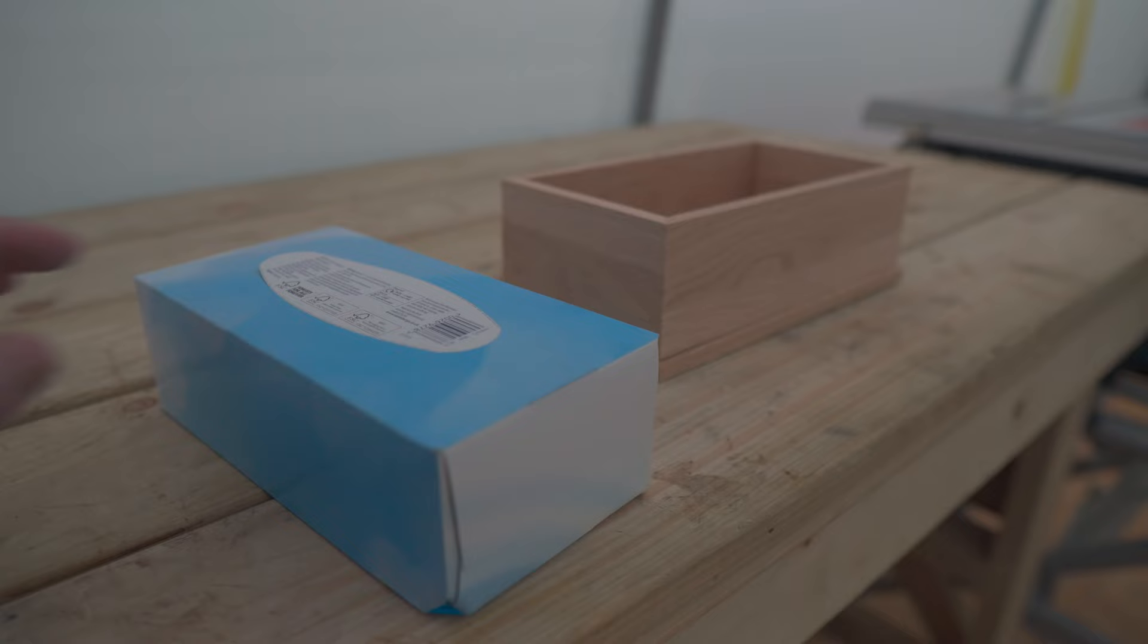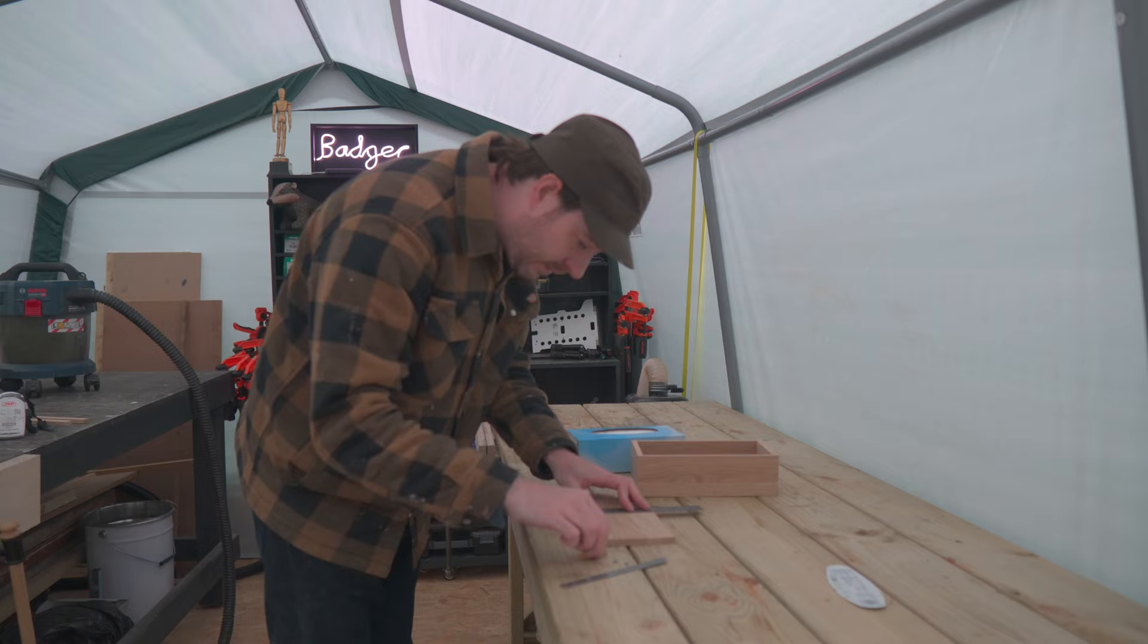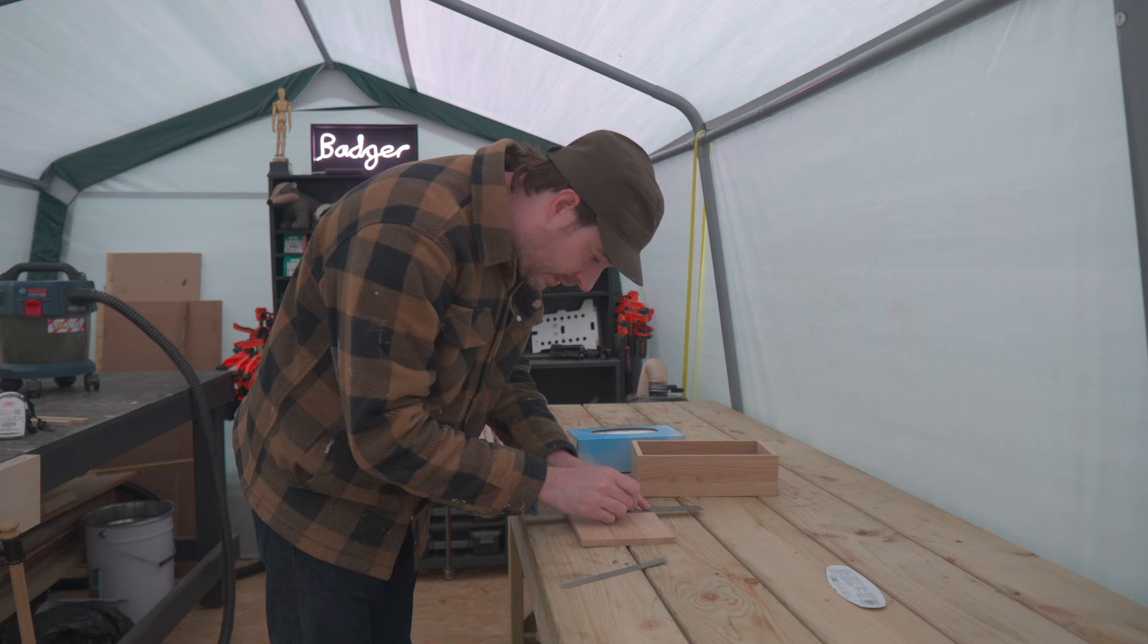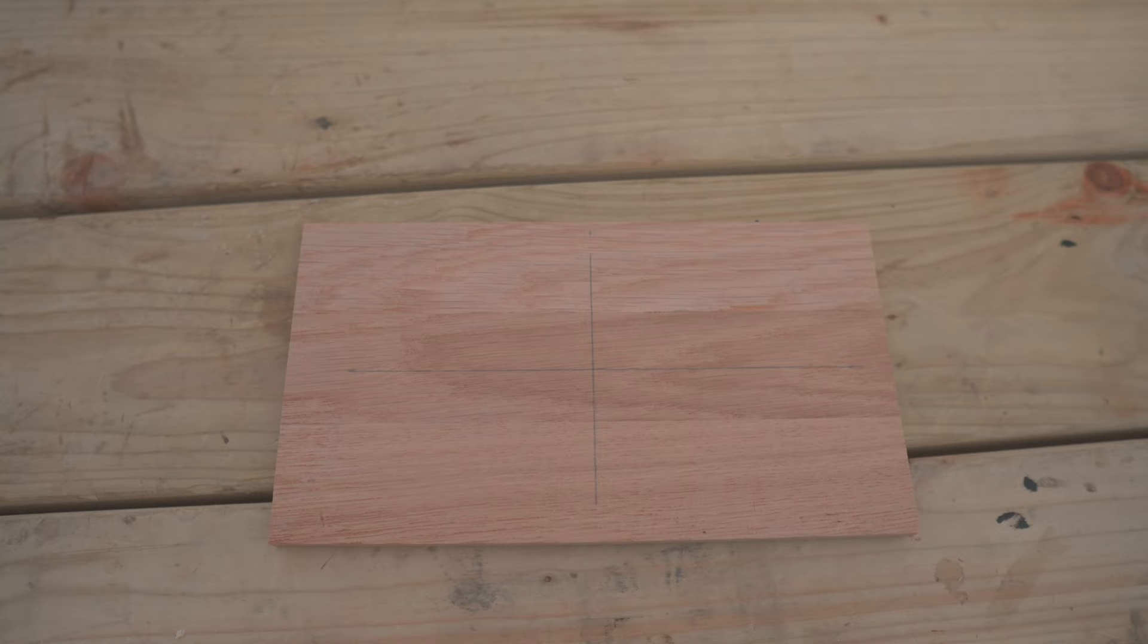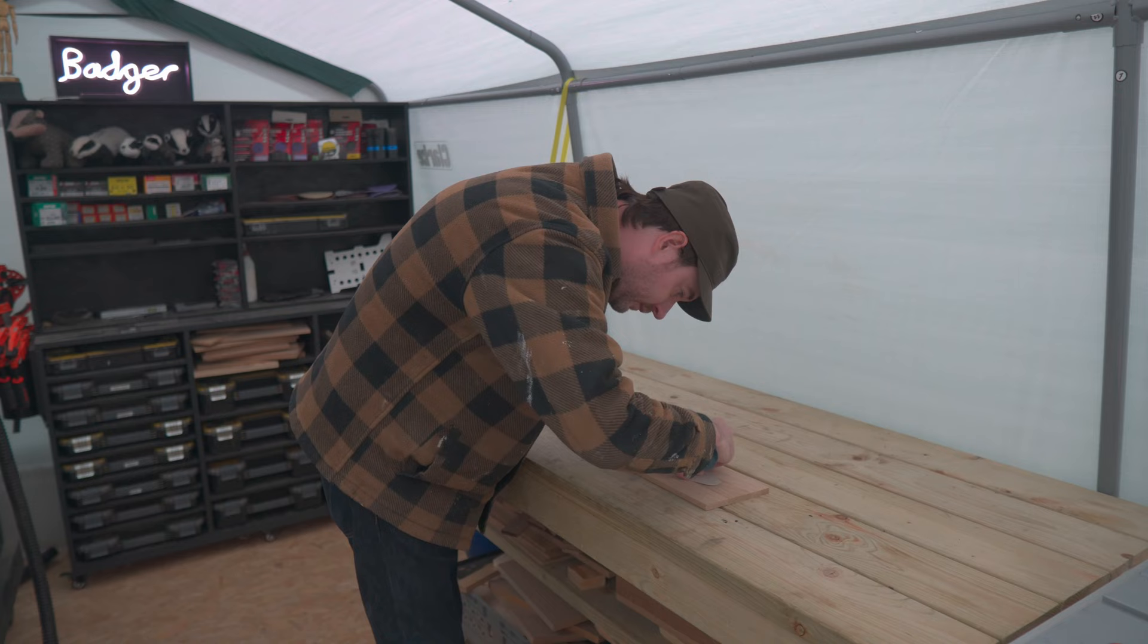Now, obviously, the lid's going to need a hole in it to actually get the tissues out. Luckily, I have a new box, so I can use that little bit as a template. So, I just draw a cross on the lid, and on that little bit of card, and get it lined up. And then, I can draw around it.